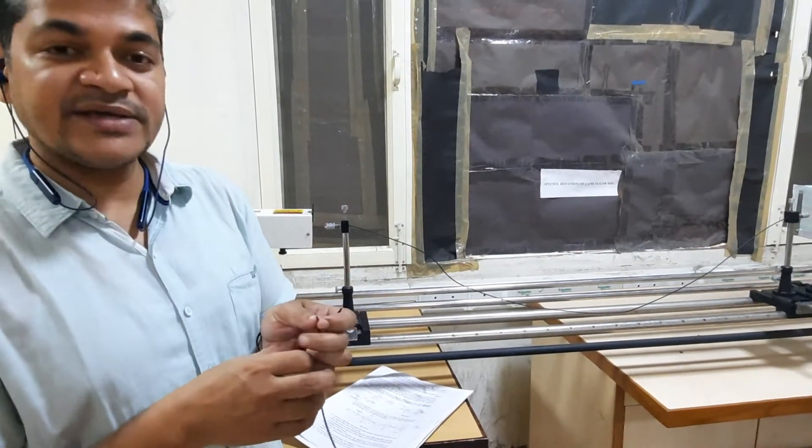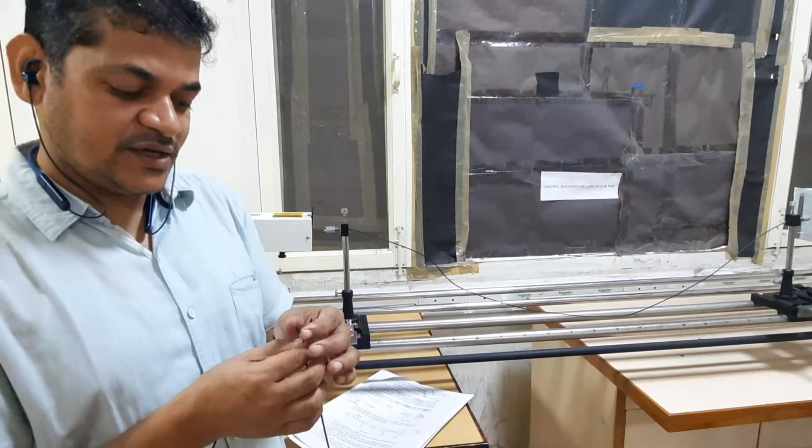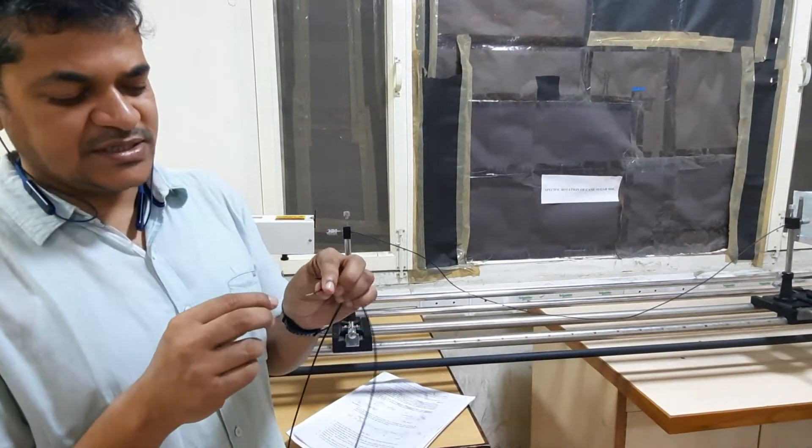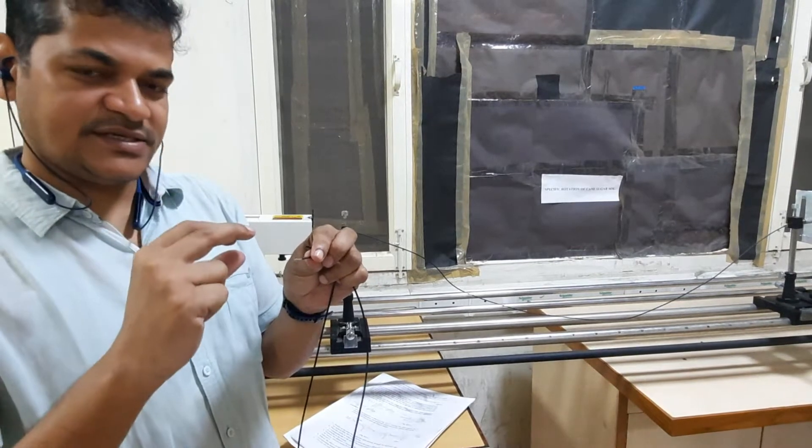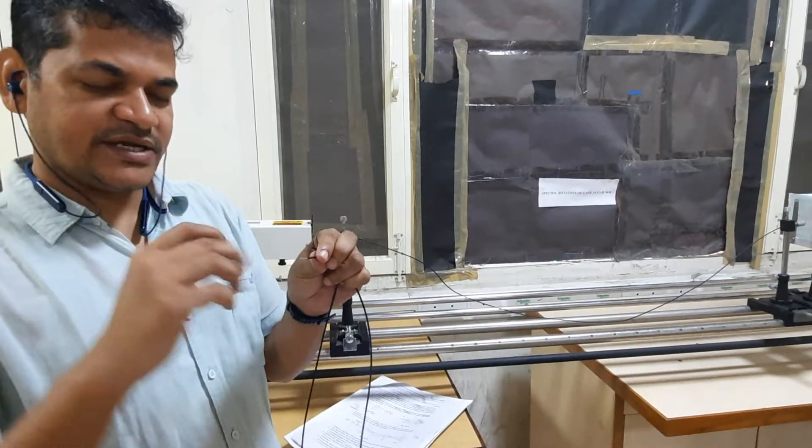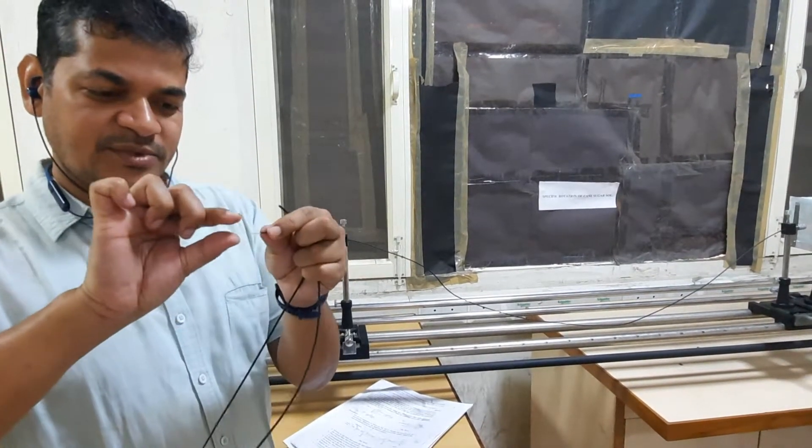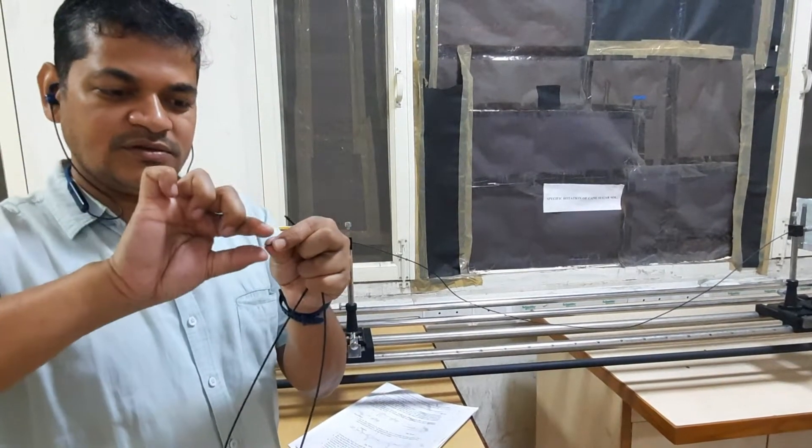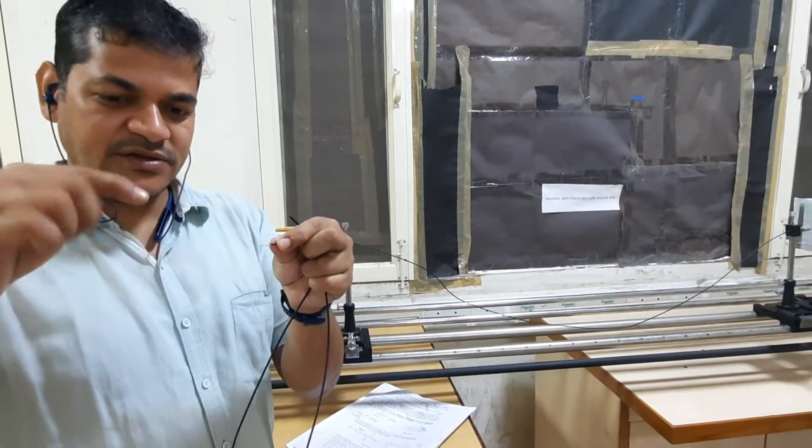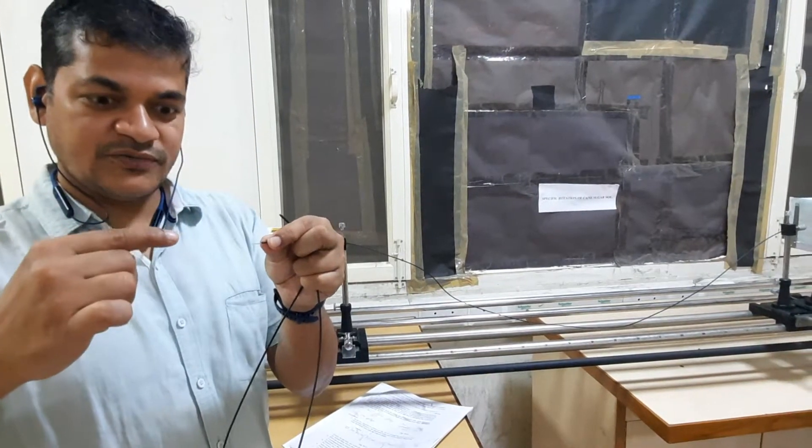So there is a quantity called acceptance angle, meaning what is the angle that it can accept the light. If you go beyond that angle - so it's like this is the cable and then there is a cone, an angle, right. So there is this angle.